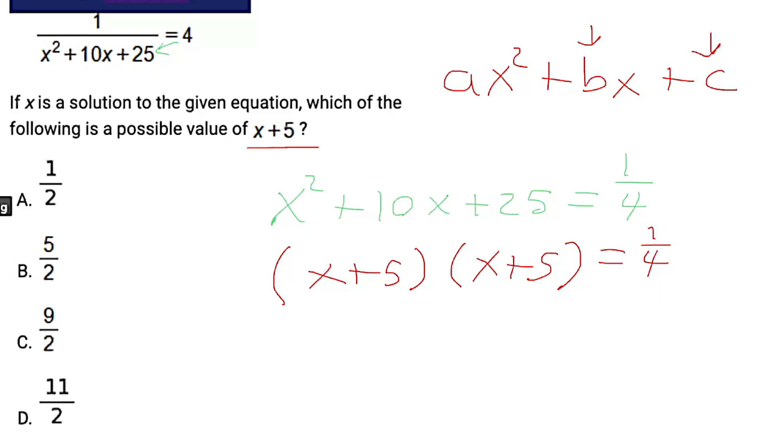So what we can do is we can say, well, x plus 5 times x plus 5 is the same thing as x plus 5 squared. And now we don't have to divide by x plus 5. We can just say we're going to take the square root. So let's take the square root of that side and the square root of this side. And then on the right side, remember, when you square root a fraction, you're basically just square rooting the numerator and the denominator. So what's the square root of 1? 1. What's the square root of 4? 2. Our answer is 1 half.